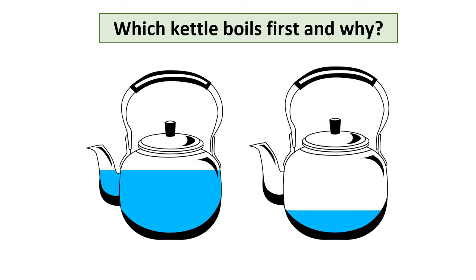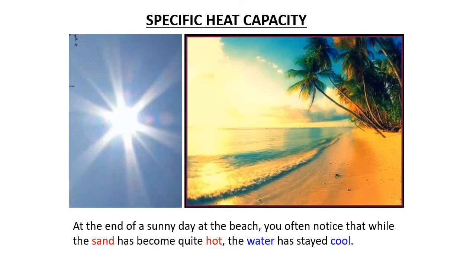Next, we will learn about the specific heat capacity of different materials. First, discuss which kettle boils first and why. The kettle with less water boils first because it has fewer particles to absorb heat, so it needs less energy. Similarly, on a sunny day the sun heats both water and sand at the same time, but their temperatures rise differently — sand becomes much hotter than water. This is because each material has a different capacity to absorb heat, which is called specific heat capacity.